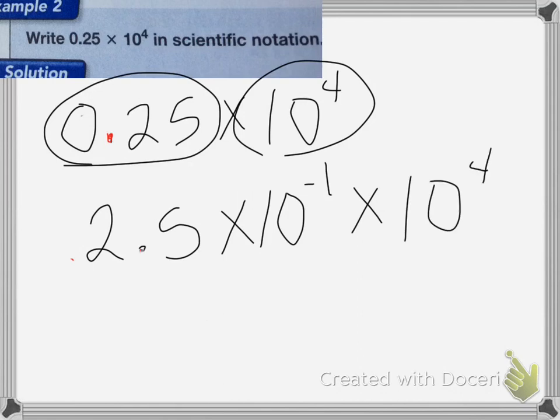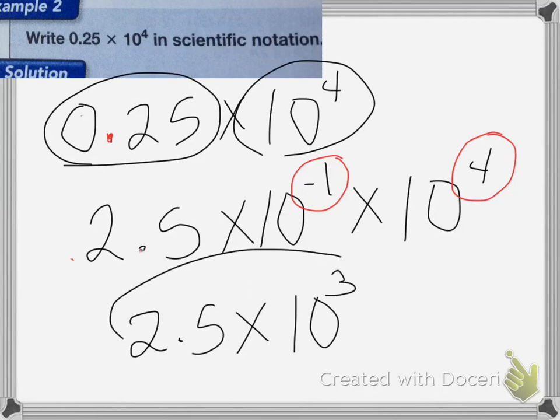So I end up with one place to the left and four places to the right. So 4 minus 1 is equal to 3. So my answer is going to be 2.5 times 10 to the 3rd power. And that's it for this lesson.